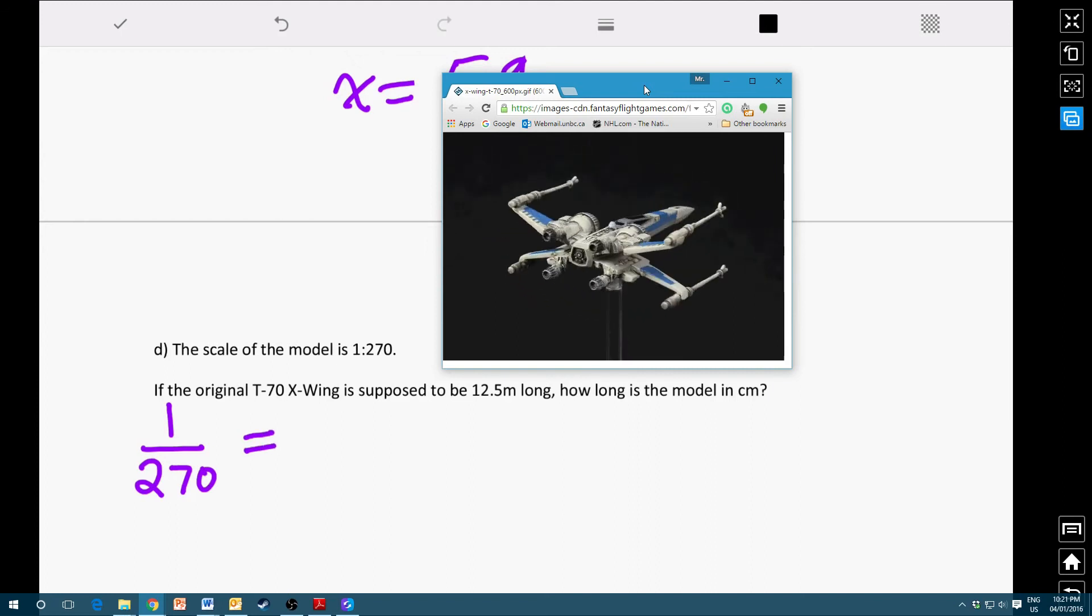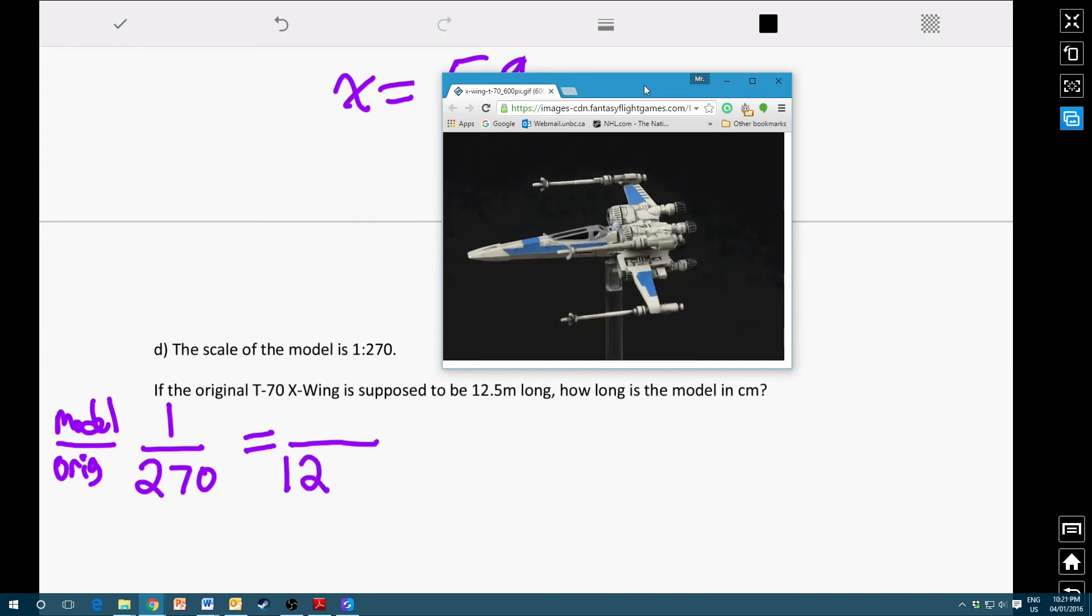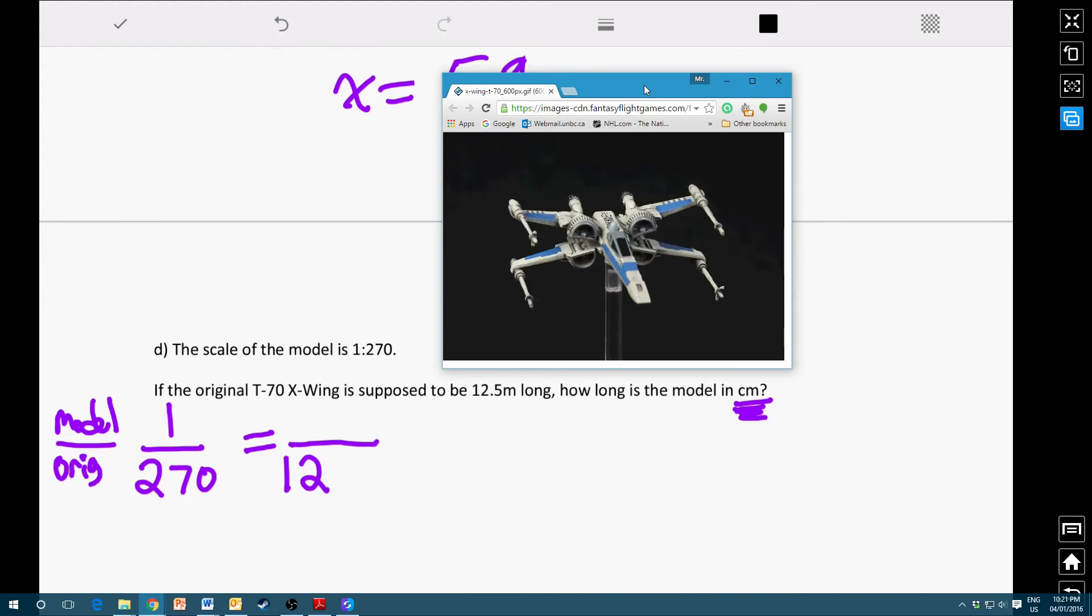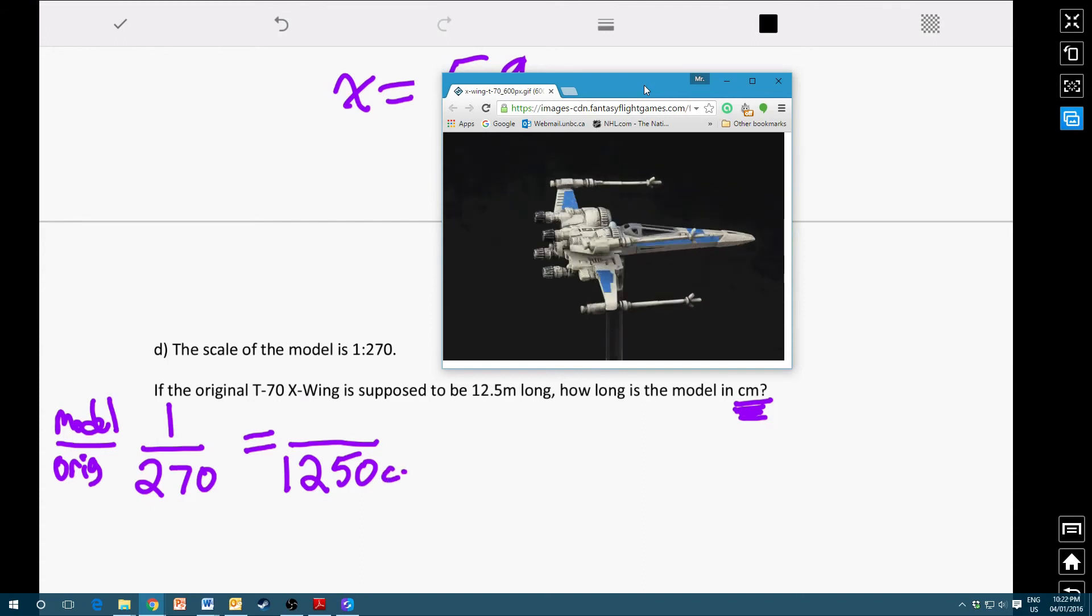Now we're looking for the length of the model. The model, if we go back to the equation we had the other day, the equation was model divided by original. So the model goes on top, the original goes on the bottom. So the original measurement is 12.5 meters. But because we want the length in centimeters, we have to change our 12.5 meters to centimeters. And we do that by multiplying it by 100. So we'll get 12.5 times 100, which will be 1250 centimeters. Then we'll go x, so the length of the model.